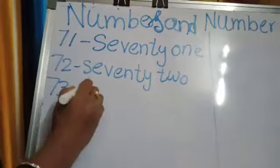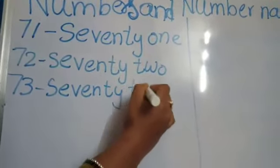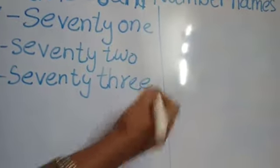Now 73. S-E-V-E-N-T-Y, 70. T-H-R-E-E, 3, 73.